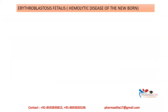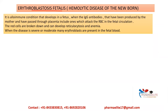The next condition is erythroblastosis fetalis, also known as hemolytic disease of the newborn. It is an alloimmune condition — a condition in which a person gains immunity from another person of the same species against its own cells. It develops in the fetus when IgG antibodies produced by the mother pass through the placenta and attack the RBCs in the fetus.